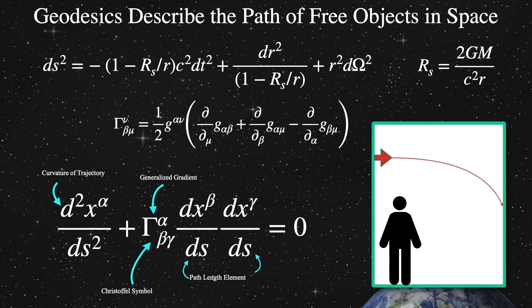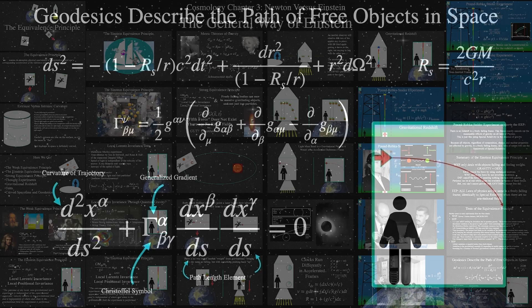Next time, we'll be looking at how Einstein describes curvature in greater detail with a strong focus on this homogeneous isotropic spacetime. Until then, I'll leave you with a succinct summary of Einstein's theory of general relativity by John Archibald Wheeler: 'Spacetime tells matter how to move, and matter tells spacetime how to curve.'